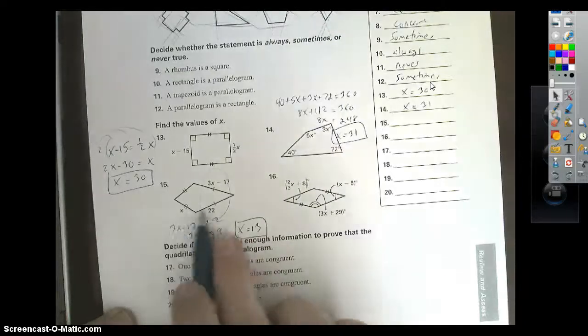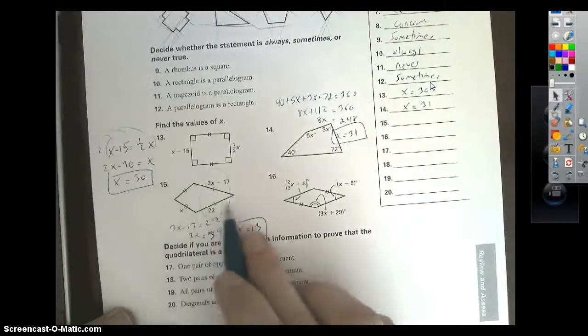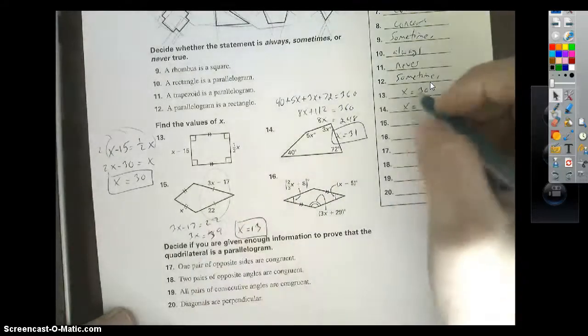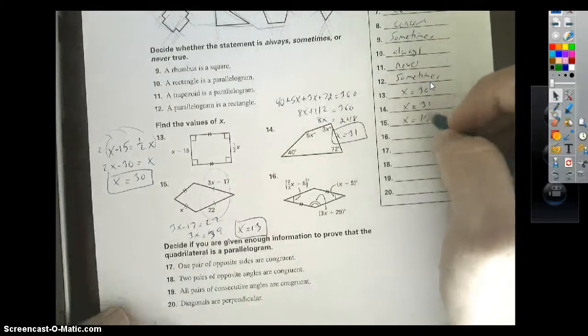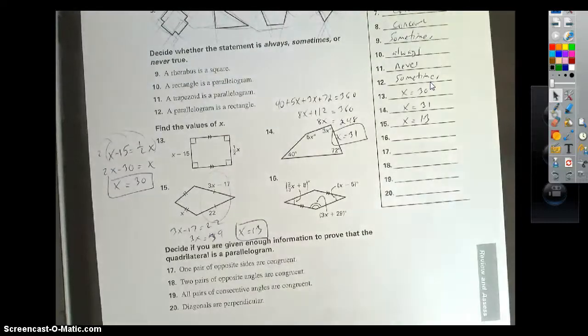As far as this x goes, it's just saying that this side length right here is 13 while these two are 22 in length. So it's almost like a red herring, if you will. Like you don't need it to solve the problem.